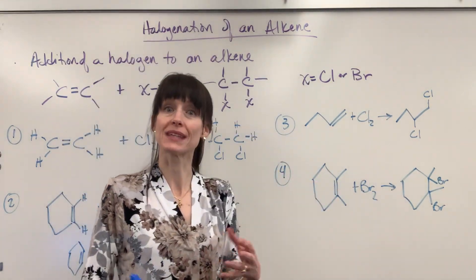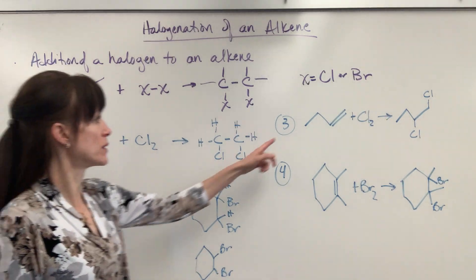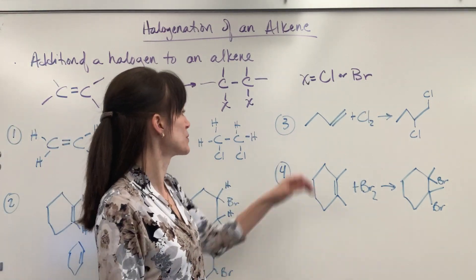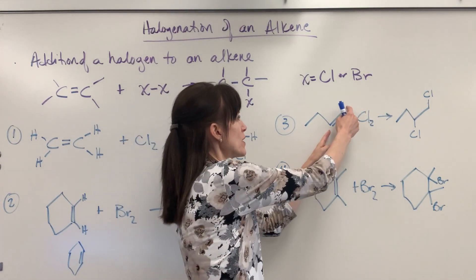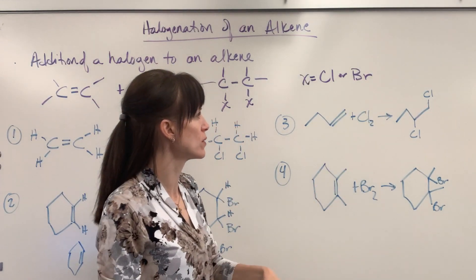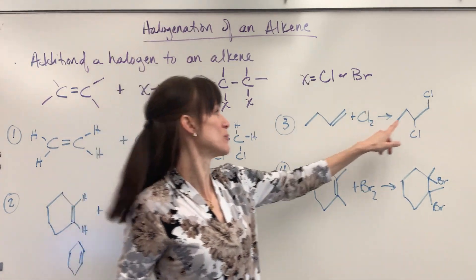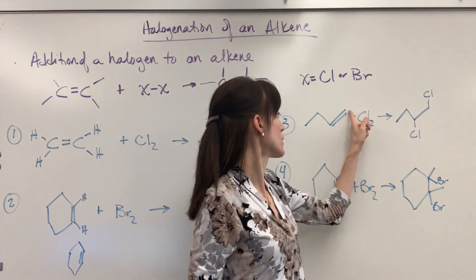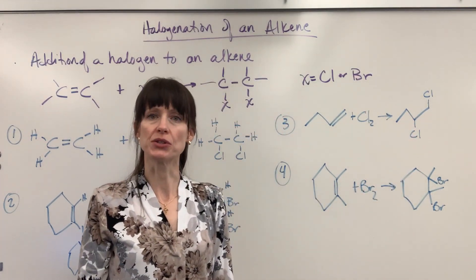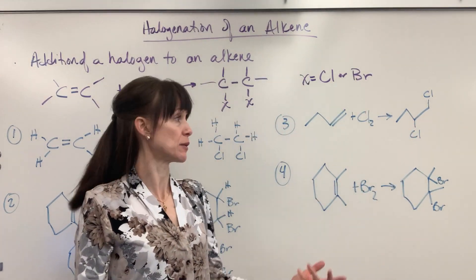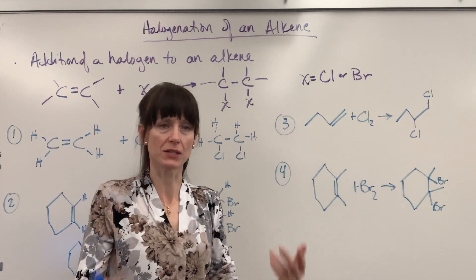Up here I wanted to do a couple of skeletal structures. Here's my condensed and here I wanted to do some skeletal. We've got one, two, three, four carbons. Notice my double bond on the one and two carbon. Add the chlorine so that double bond is gone, and we put the chlorine on the carbons that were touching the double bond — there's my chlorine on the one and the two carbon. Double bond's gone.